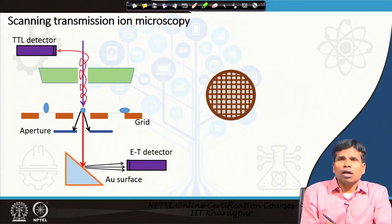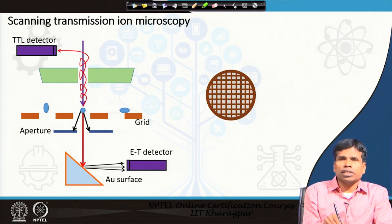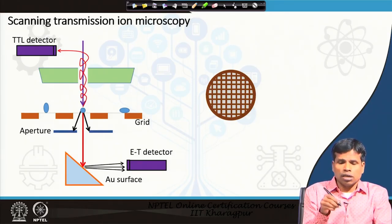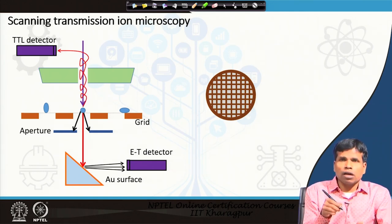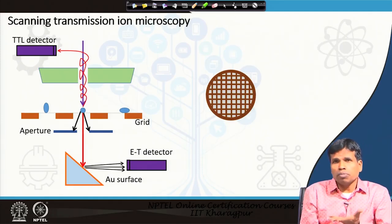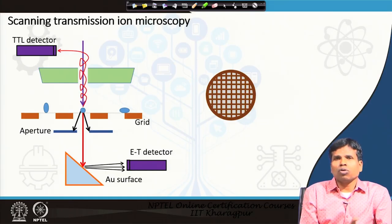If electrons or ions have to transmit through the sample, the first requirement is that the sample should be very thin. If it is not thin, the electron beam or ion beam cannot pass through it. Second, we need a certain device or adapter placed at the bottom — a screen or detector — to collect how many ions or electrons are transmitted through the specimen.